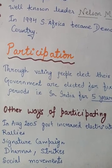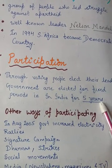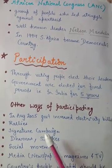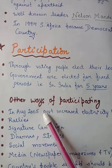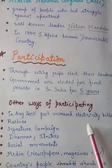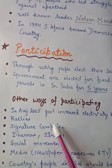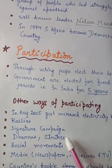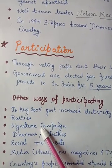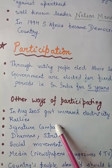If the people feel the government is working well for them, they can re-elect it after five years. Other ways of participation: in August 2005, the government increased electricity bills. People did not accept this, so they took out rallies and signature campaigns. A signature campaign means writing a petition letter that everyone signs. As a result, the government had to change its decision because it is responsible to the people.